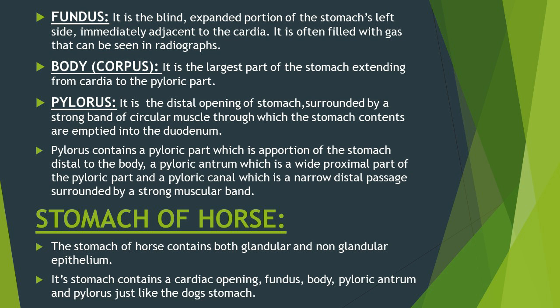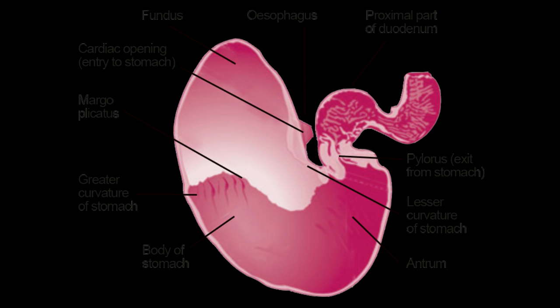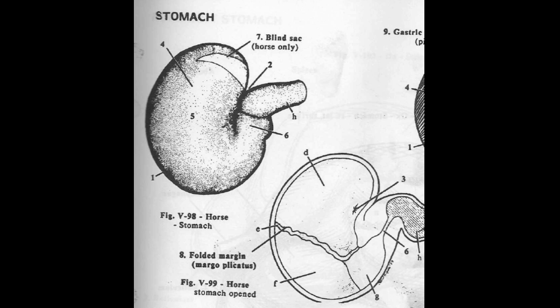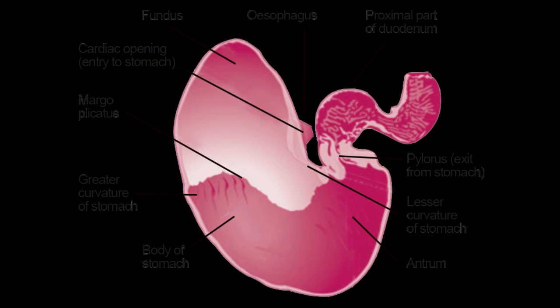The stomach of horse contains both glandular and non-glandular epithelium. Its parts are the same as the dog — cardiac opening, fundus, body, pyloric antrum, and pylorus. The fundus of the equine stomach contains non-glandular epithelium while the body and pylorus contain glandular epithelium. These glandular and non-glandular portions are separated by a clearly visible internal irregular raised line which can also be seen externally. This line is called margo plicatus or folded margin.